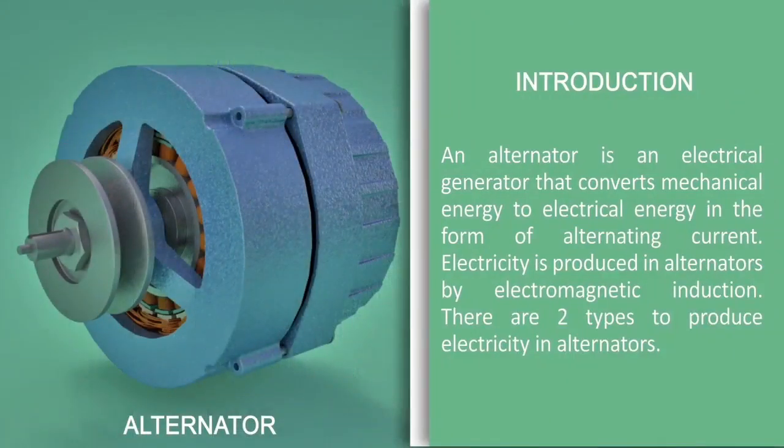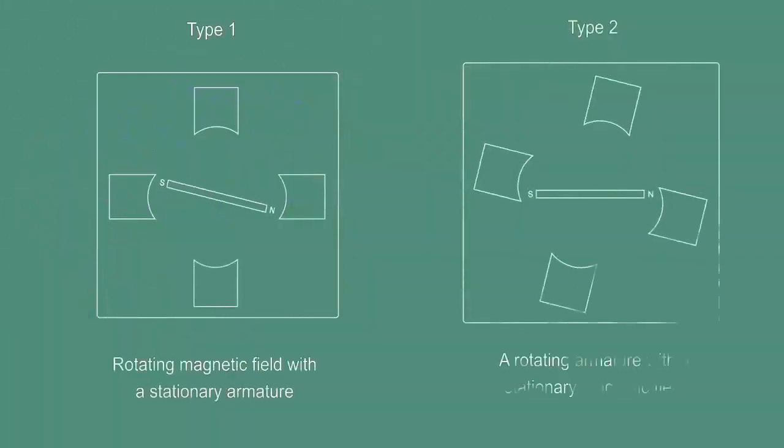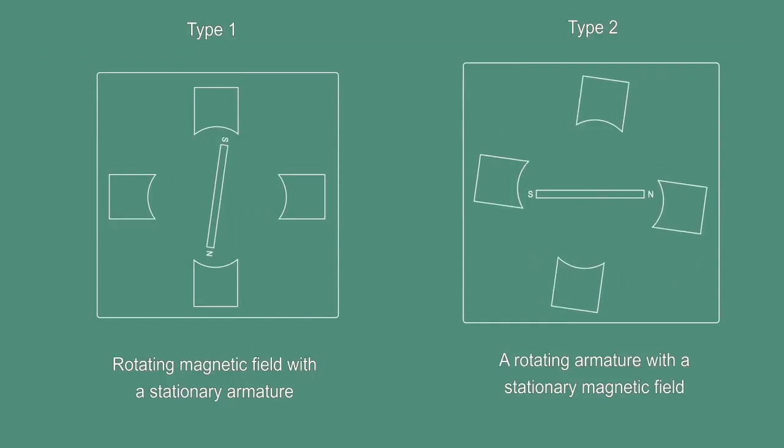An alternator is an electrical generator that converts mechanical energy to electrical energy in the form of alternating current. Electricity is produced in alternators by electromagnetic induction. There are two types to produce electricity in alternators: Type 1, rotating magnetic field with a stationary armature.